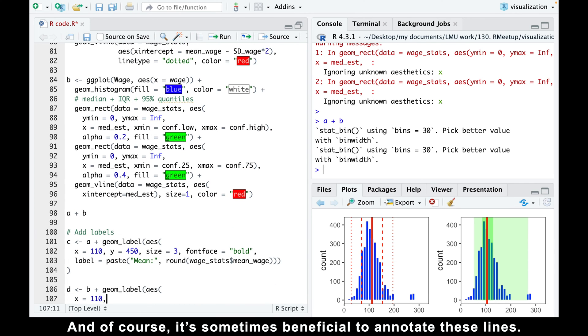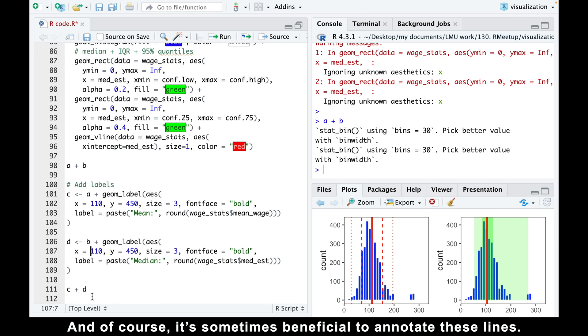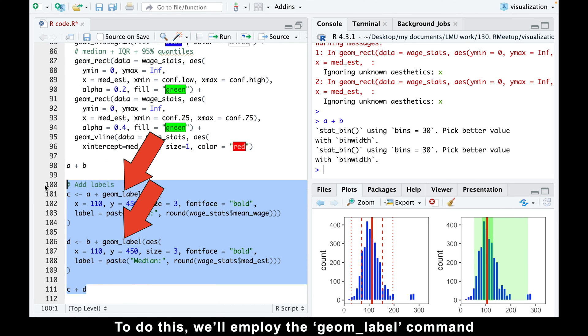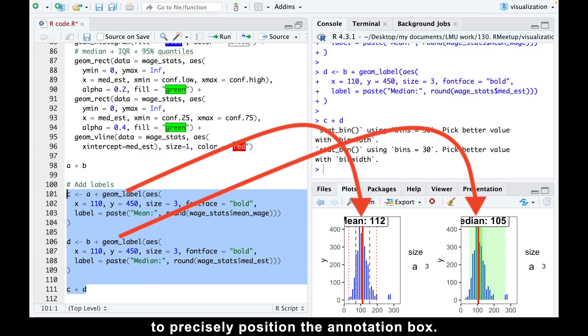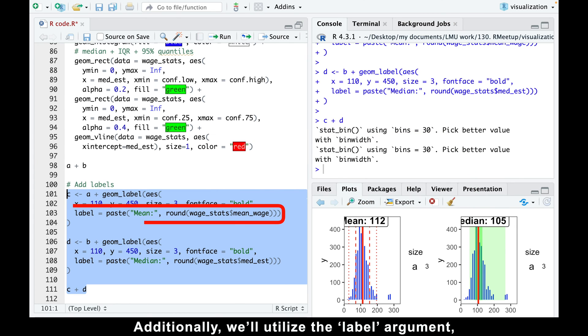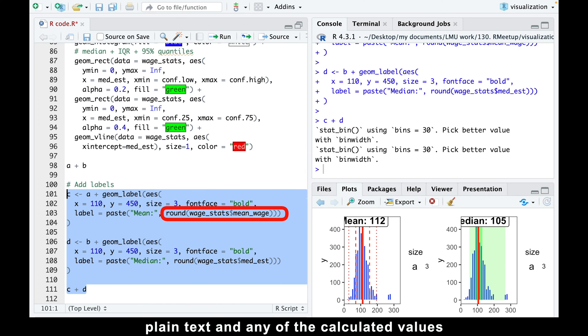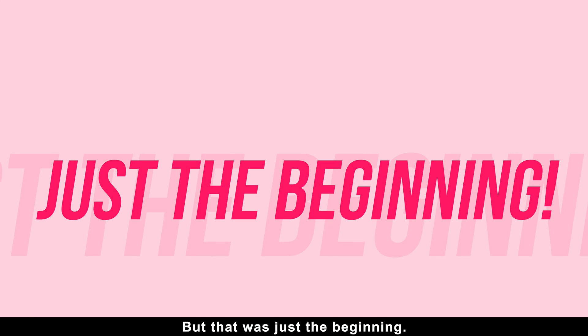To do this, we'll employ the geom_label command with specified x and y coordinates to precisely position the annotation box. Additionally, we'll utilize the label argument, which allows us to include both plain text and any of the calculated values. But that was just the beginning.